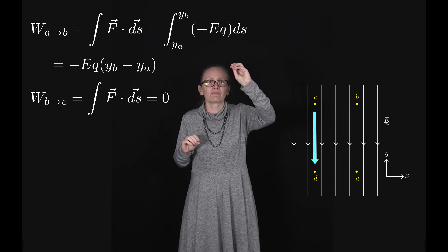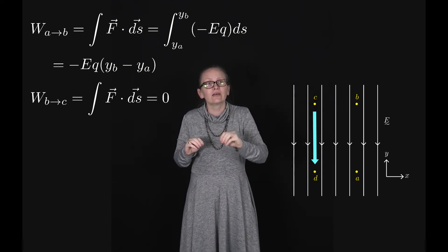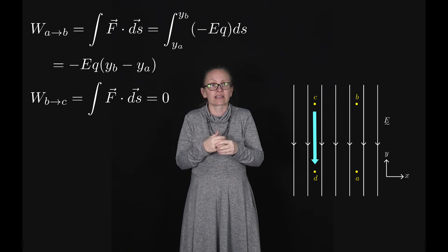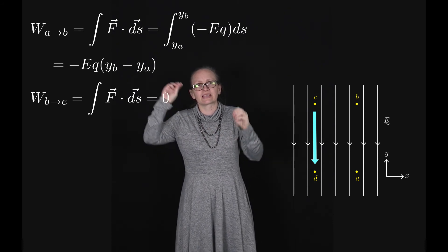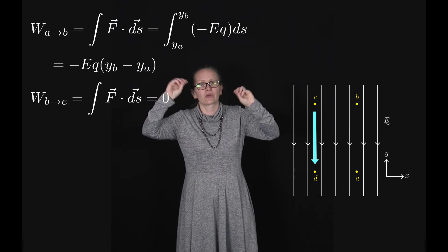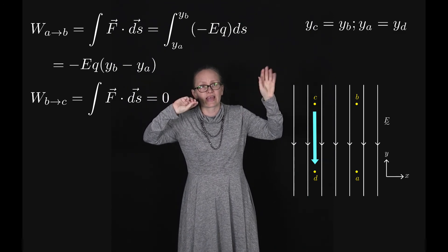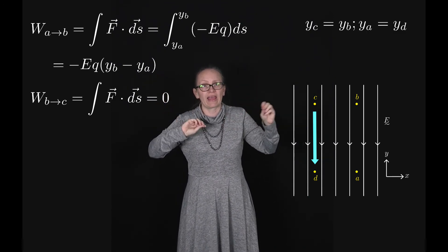Now if it moves from C to D we can calculate the electrostatic work once again. So when we're doing that just remember that C and B have the same height. So yc and yb are the same and yd and ya are the same.